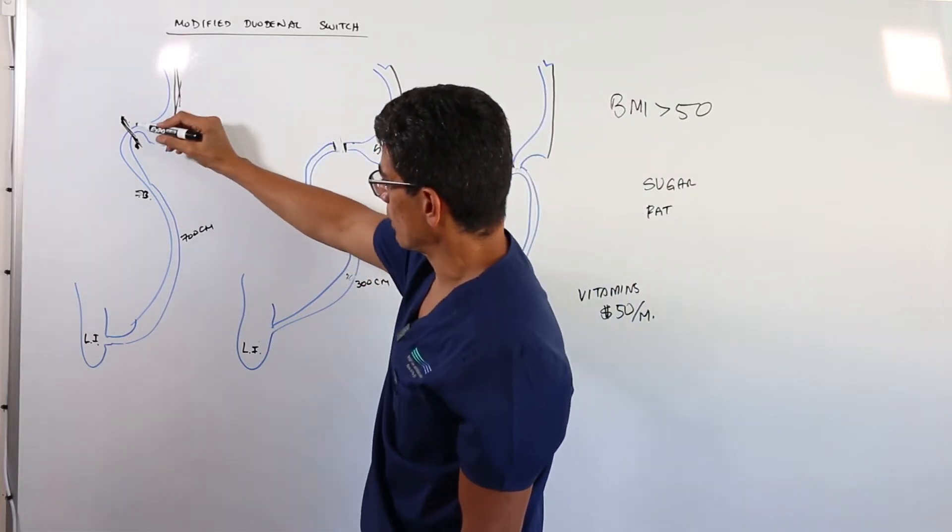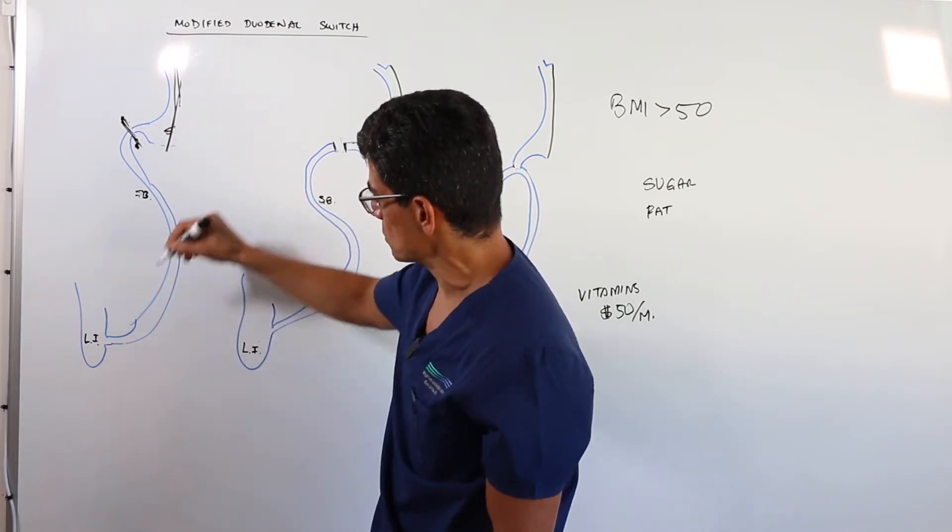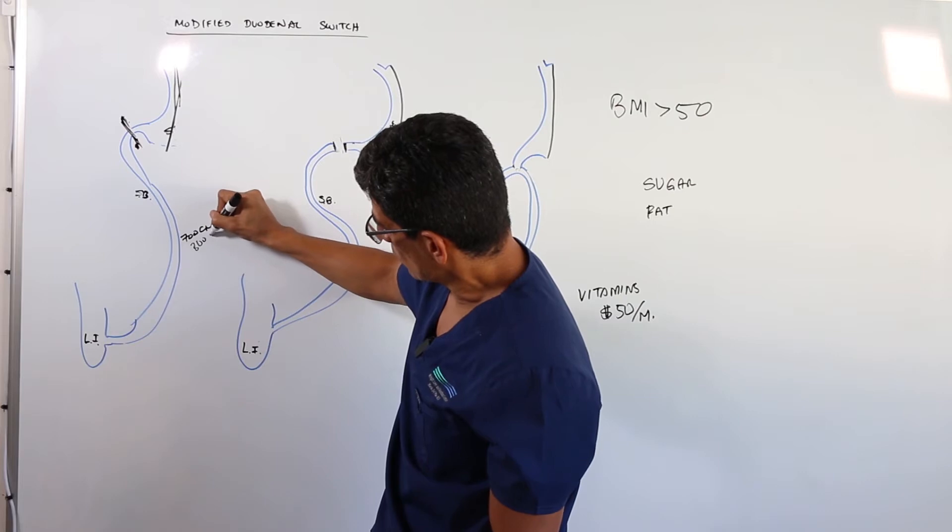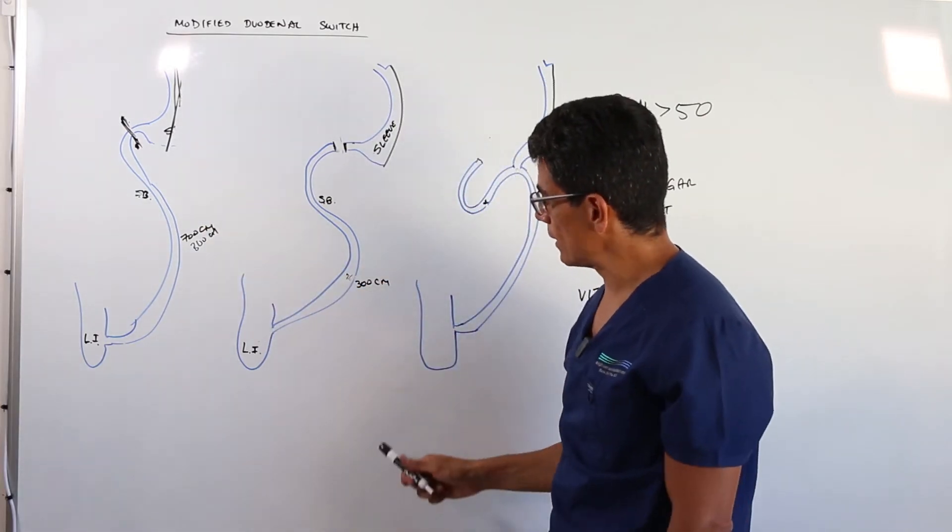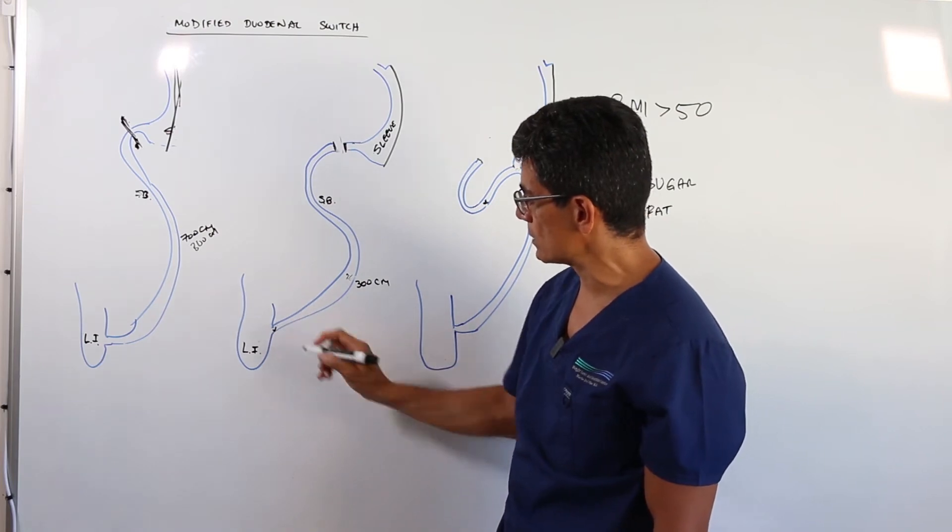Now take into consideration that the small bowel measures between 700 to 800 centimeters in length. So the next step for me is going to be to identify the ends of this intestine, small bowel.